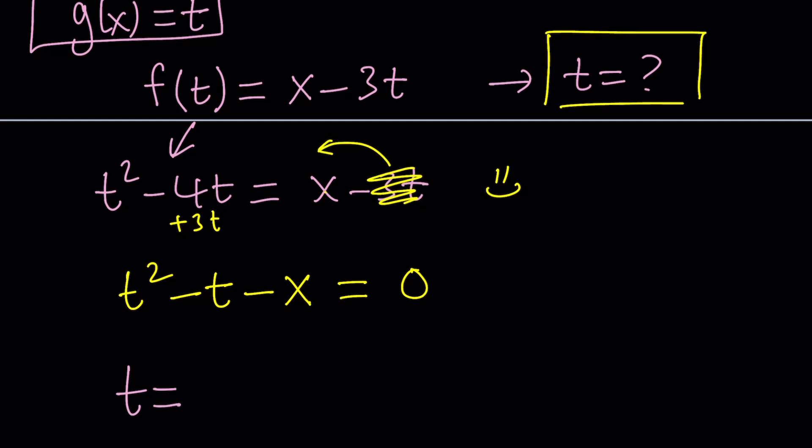So, t equals. Remember, this is quadratic in t, not x. So, you have to look at the coefficients of t squared and t and the constant. The constant in this case is negative x. The coefficient of t is negative 1. And as you know, the formula starts with negative b, which is 1. Plus minus the square root of b squared, which is 1 again. Minus 4ac, 4 times a, which is 1, times c, which is negative x. And then this is divided by 2a, but a is 1, so it's going to be 2.